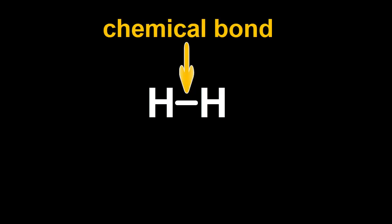Scientists like to have a shorthand way of writing this molecule. Here's one way to show it, with the hydrogen symbols joined by a stick to show the chemical bond between the atoms. Another way is to write H2, with the little 2 after the H and a bit lower. A number written this way is called a subscript.